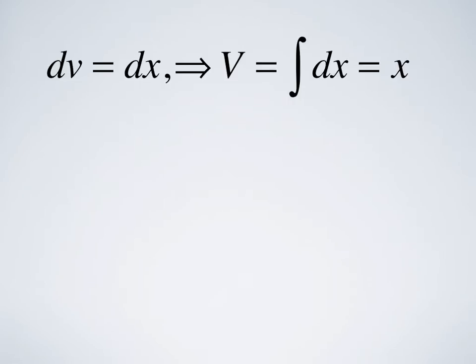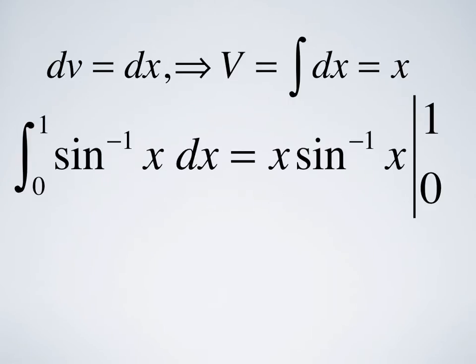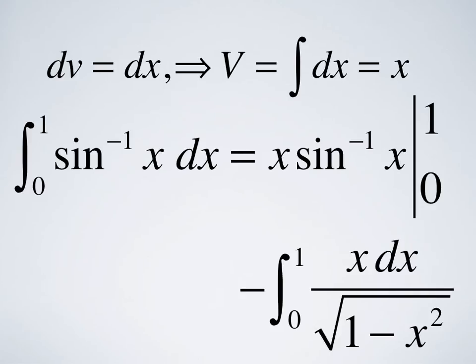We take dv to be dx, doing the same thing we did with the integral of the tangent. So we get the integral from 0 to 1 of sine inverse of x dx equals x sine inverse x from 0 to 1 — that's the uv term — minus the integral of v du, which in this case is x dx over the square root of 1 minus x squared.